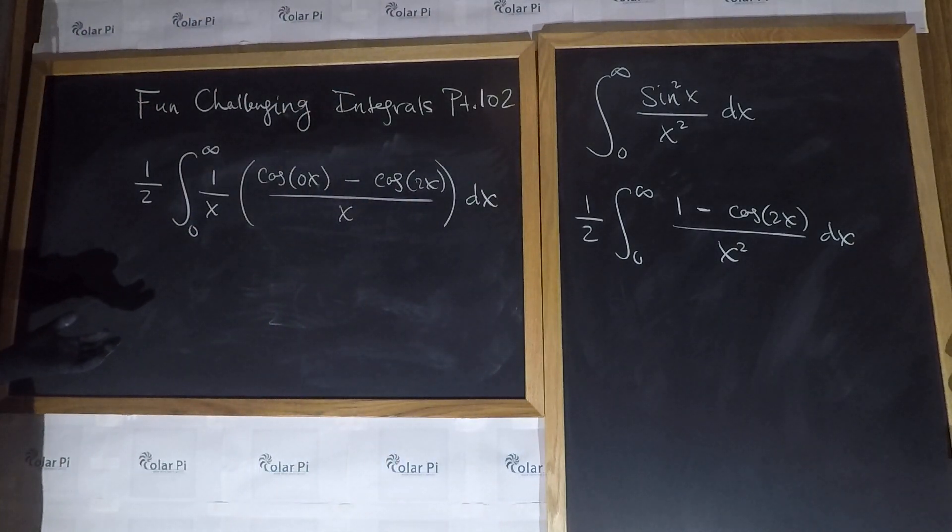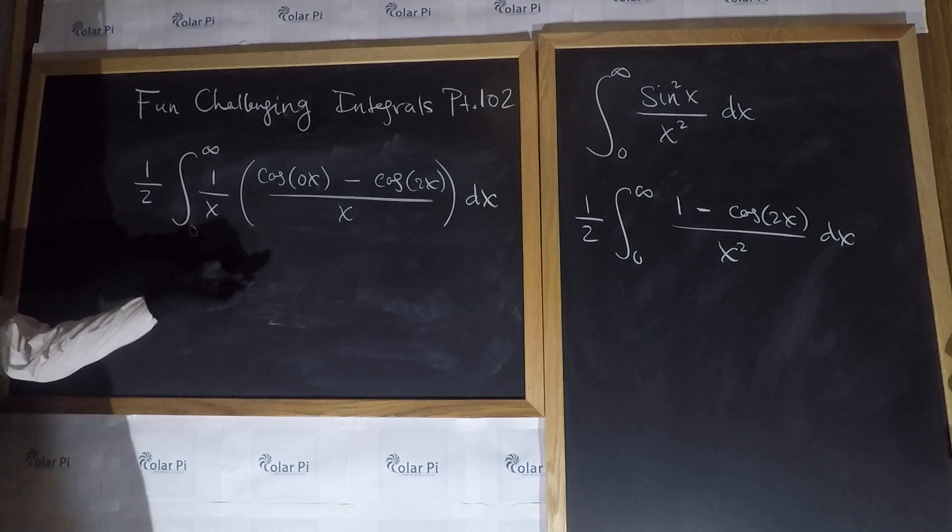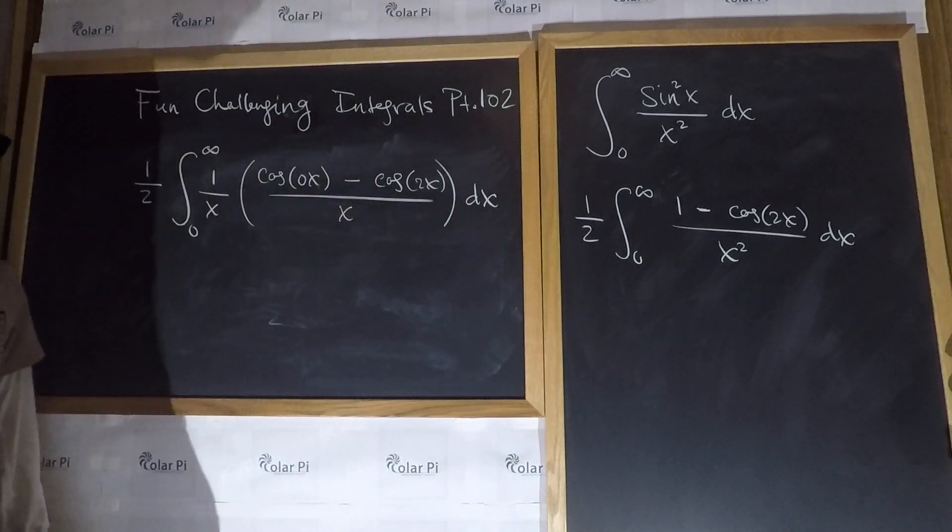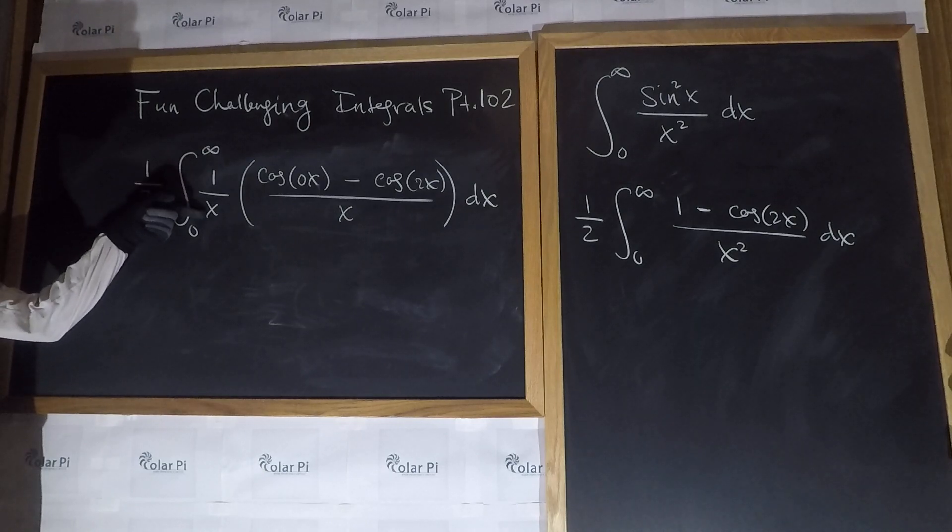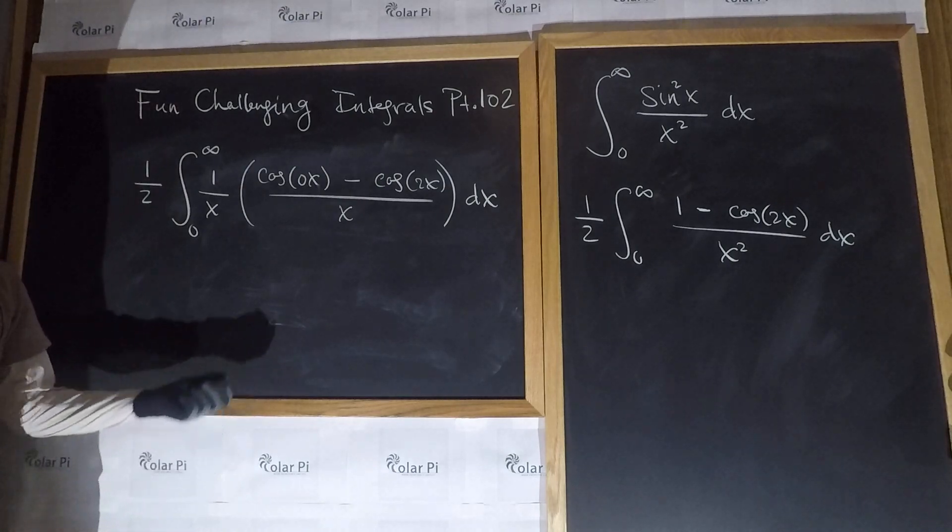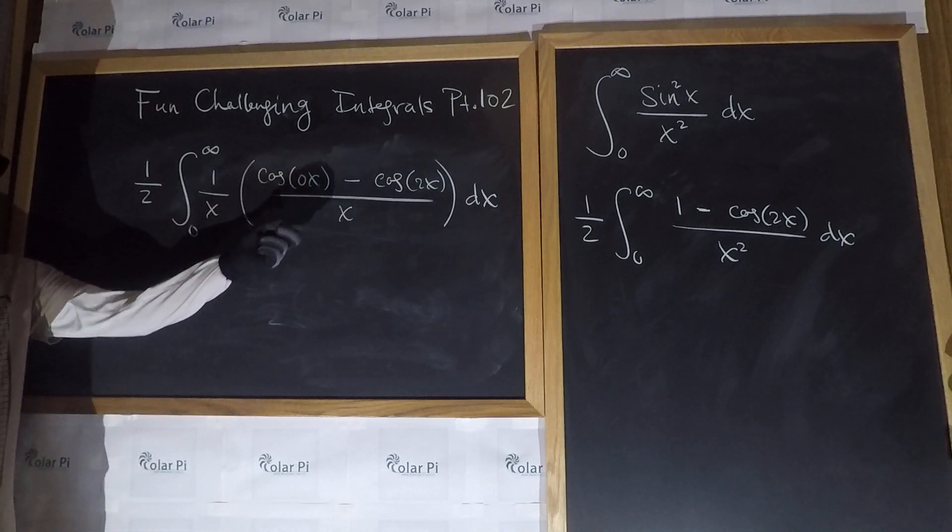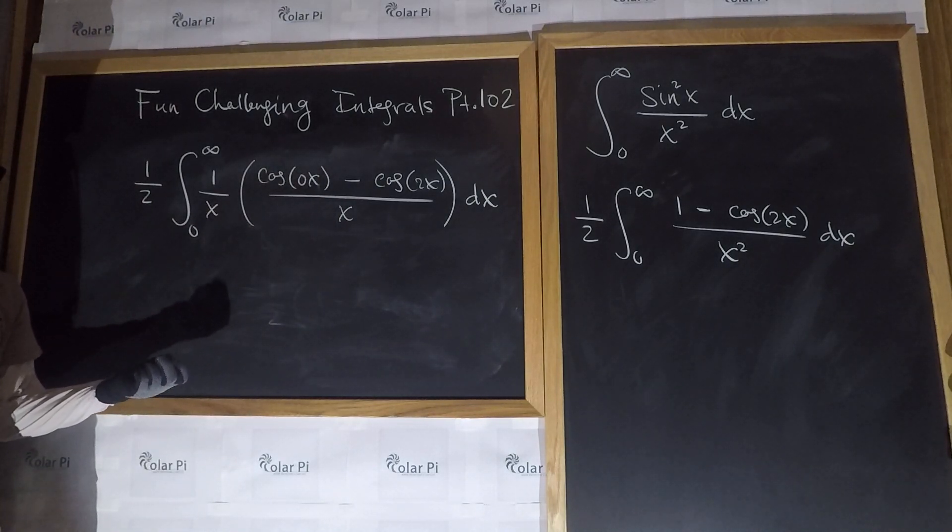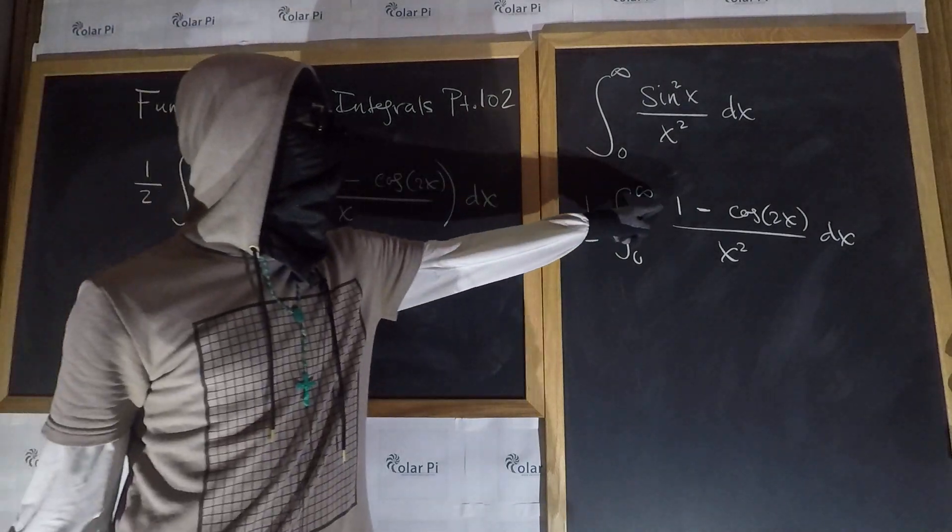There is nothing wrong with writing this in place of what I had had before. First, 1 over x to make the x squared that I need in the denominator. And, then, cosine of 0x is just cosine of 0, which is 1. So, that's that.